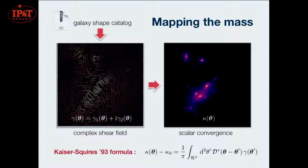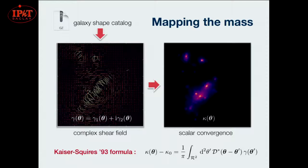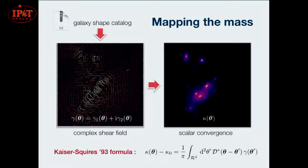This Kaiser-Squires formula seems to work pretty well, except not really near the borders — if you have structures near the edges, because we're not actually integrating over all of R2. You also get problems when you have masks, which are definitely a real thing we have to deal with.